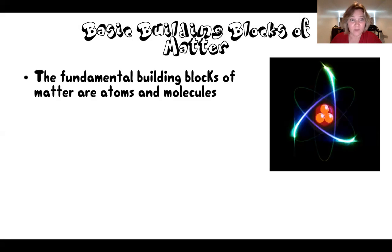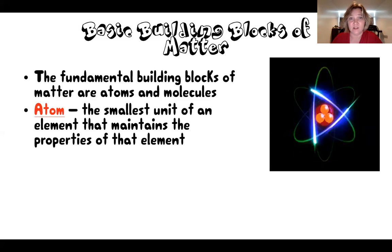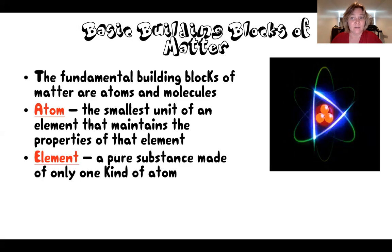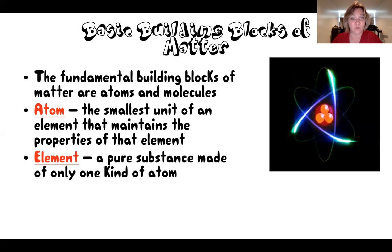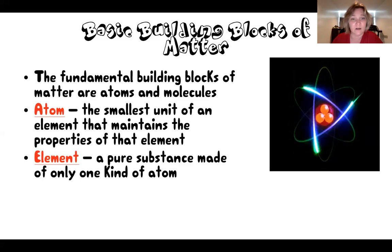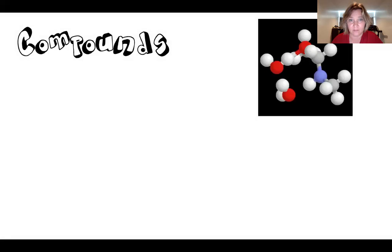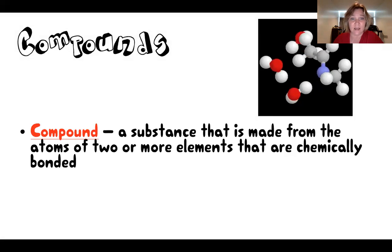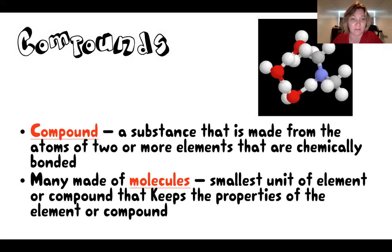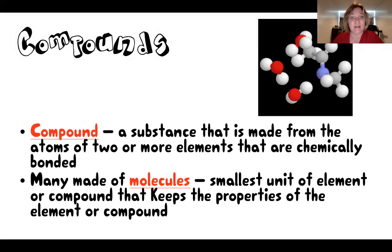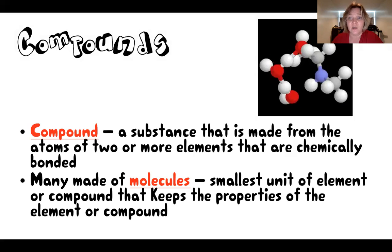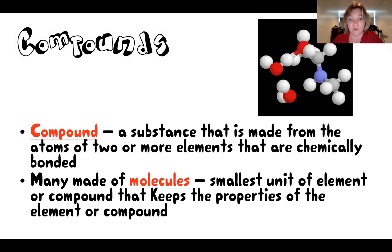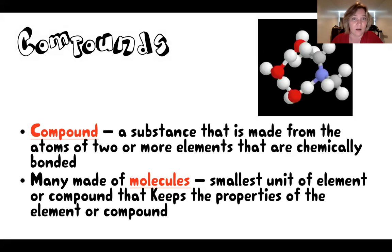This is an atom, which is the fundamental building block of matter, and atoms make up elements. Elements are pure substances that are made of only one kind of atom. A compound is a substance that is made from the atoms of two or more elements chemically bonded, and many compounds are molecules, which are a small unit of an element or compound that keeps the properties of the element or compound.